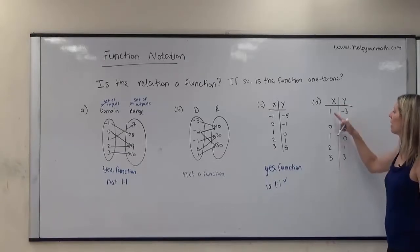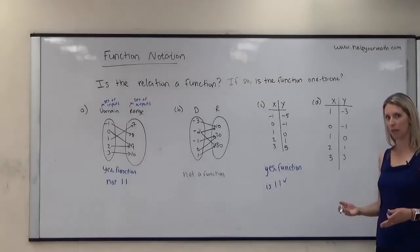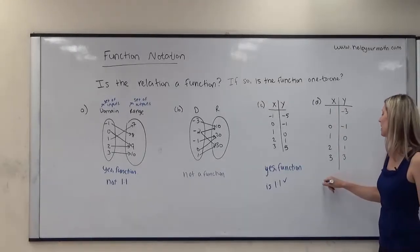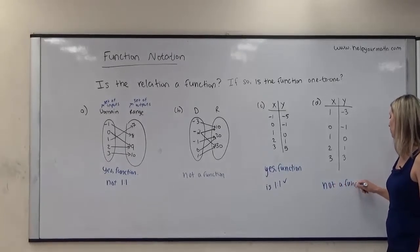The table in letter D, we have one, zero, one, one. Okay, I said one twice. So because we have an input that repeats, that indicates that this is not a function. Since it's not a function, we don't have to look at whether it's one-to-one or not.